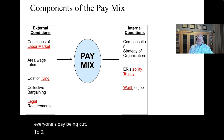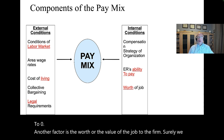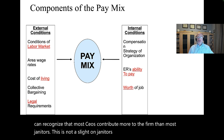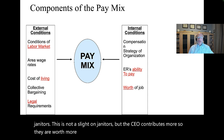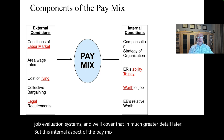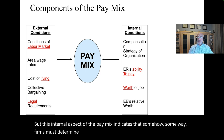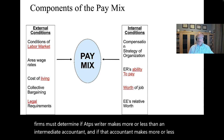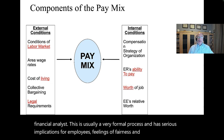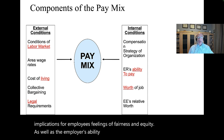Another factor is the worth or value of the job to the firm. Most CEOs contribute more to the firm than most janitors, so they earn more — it's pretty simple. When ranking employees on their relative worth, we use point systems or job evaluation systems. Firms must determine if a TPS writer makes more or less than an intermediate accountant, and if that accountant makes more or less than a financial analyst. This is usually a very formal process with serious implications for employees' feelings of fairness and equity, as well as the employer's ability to attract great applicants.